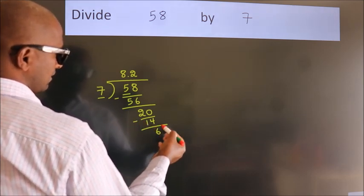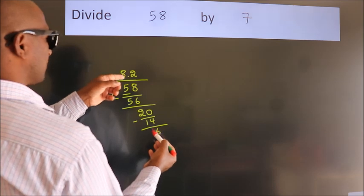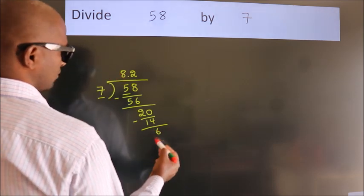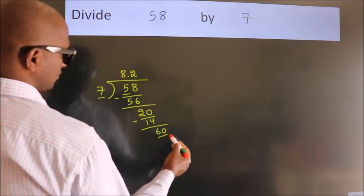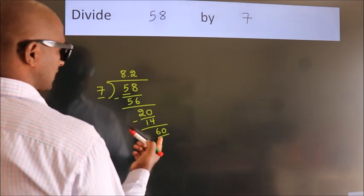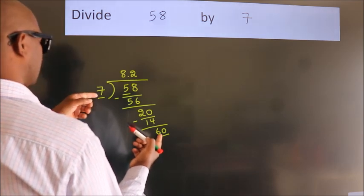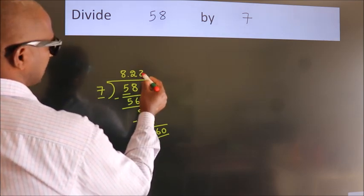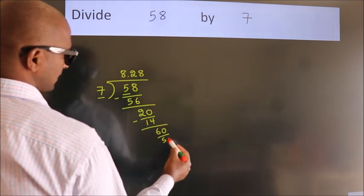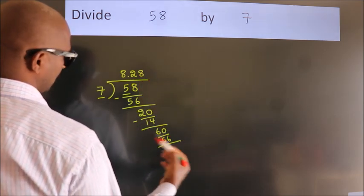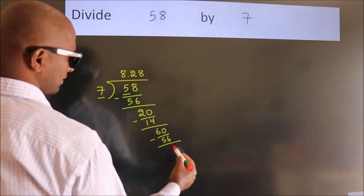After this, we already have the decimal, so directly take 0. So, 60. A number close to 60 in the 7 table is 7 times 8, which is 56. Now we subtract and get 4.